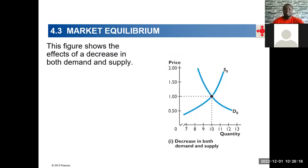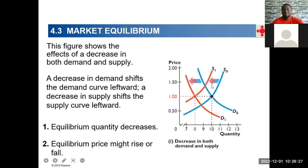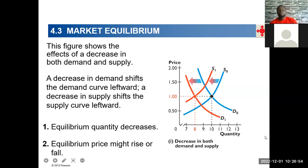Now let's look at a decrease in both demand and supply. Both supply and demand fall, so here too the price will be ambiguous, but the quantity will definitely fall. The equilibrium could be at a point where price goes up, or where price falls, or as drawn, there's no change at all.